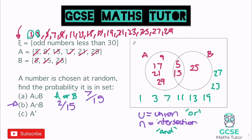The final part is A' — a dash next to a letter means 'not in A'. Numbers not in A include 25 in B, and all the numbers around the outside, but not the numbers just in A (9, 17, 21, 29) or in both A and B (5 and 15). So we've got 1 number in B only and 8 numbers on the outside: that's 9 numbers out of 15, giving a probability of 9/15.